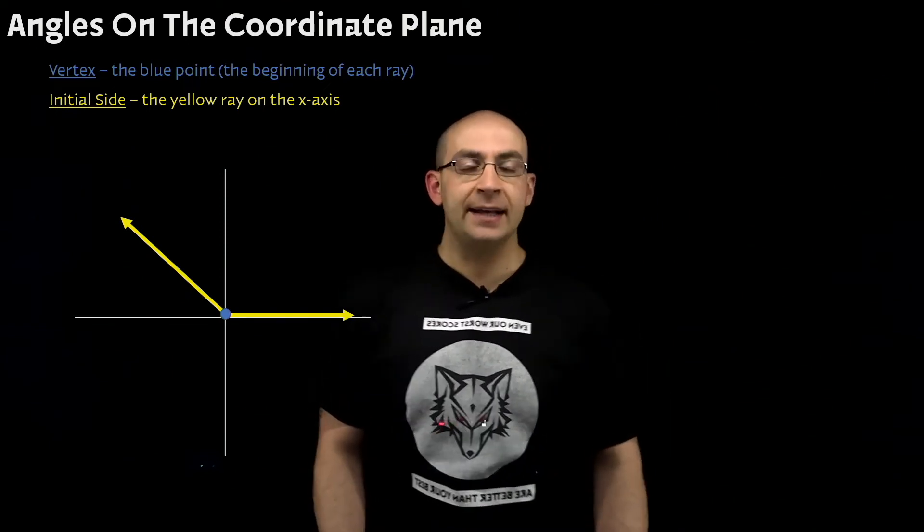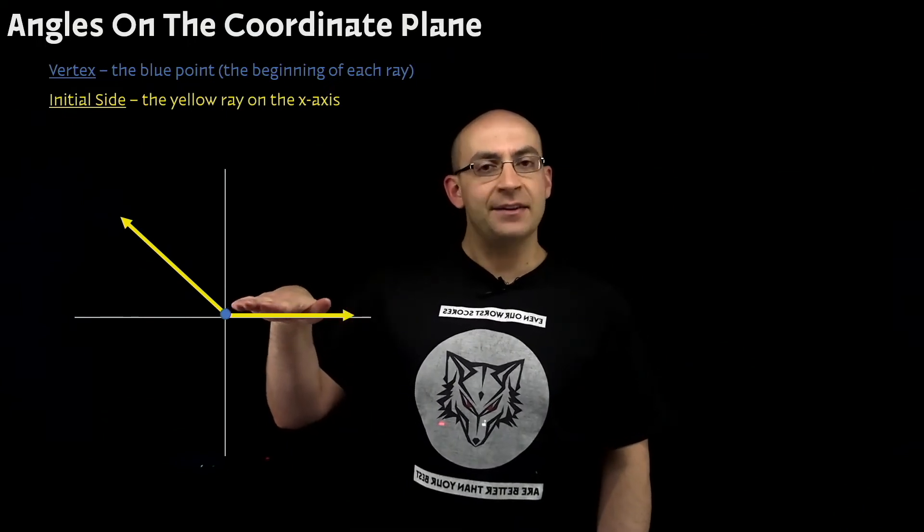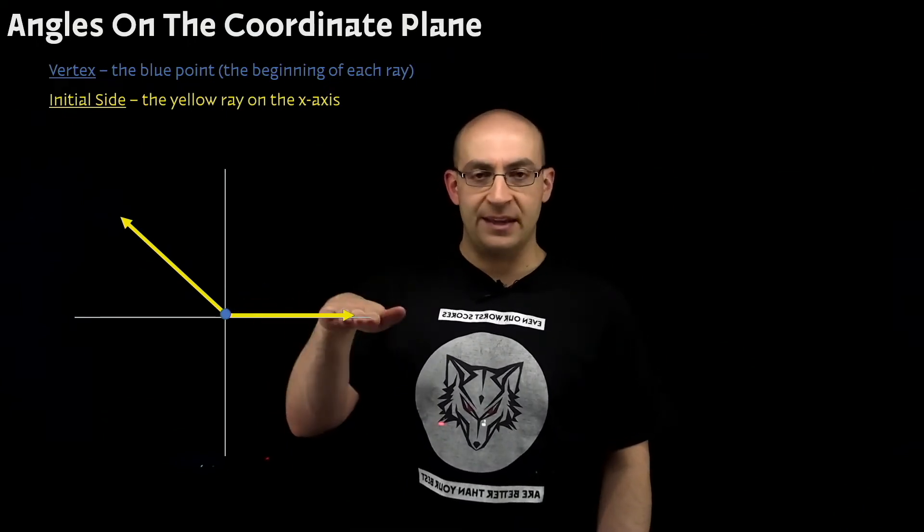The initial side is the yellow ray that is actually on the x-axis.